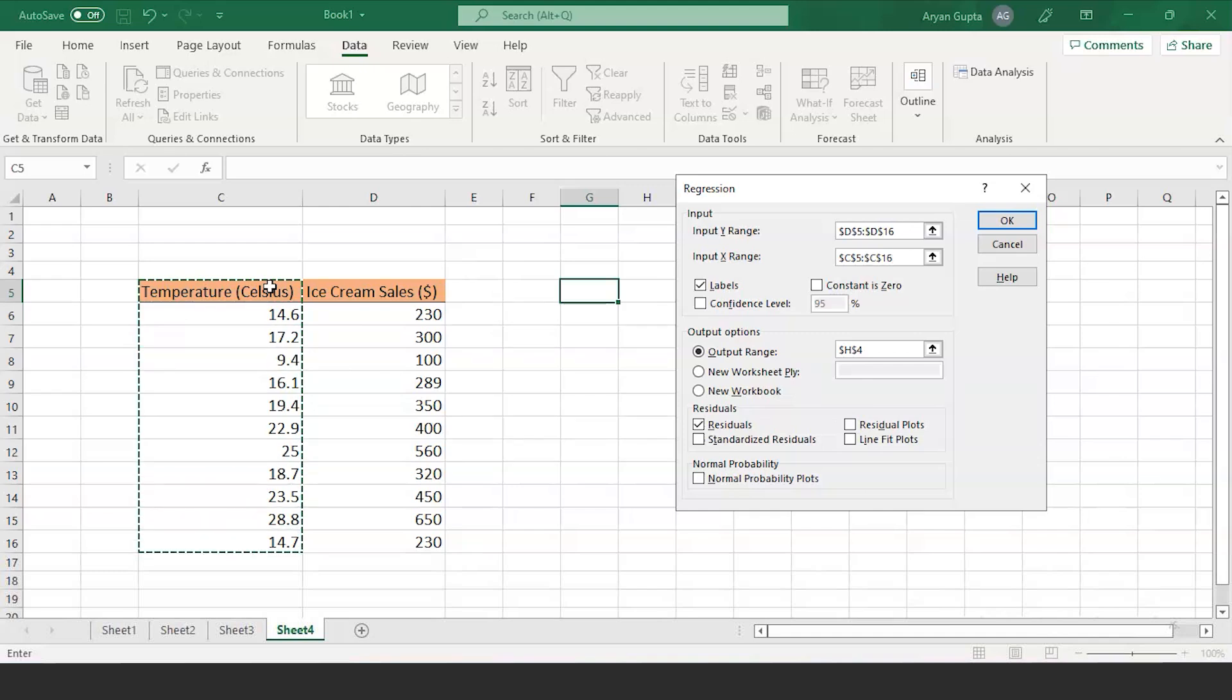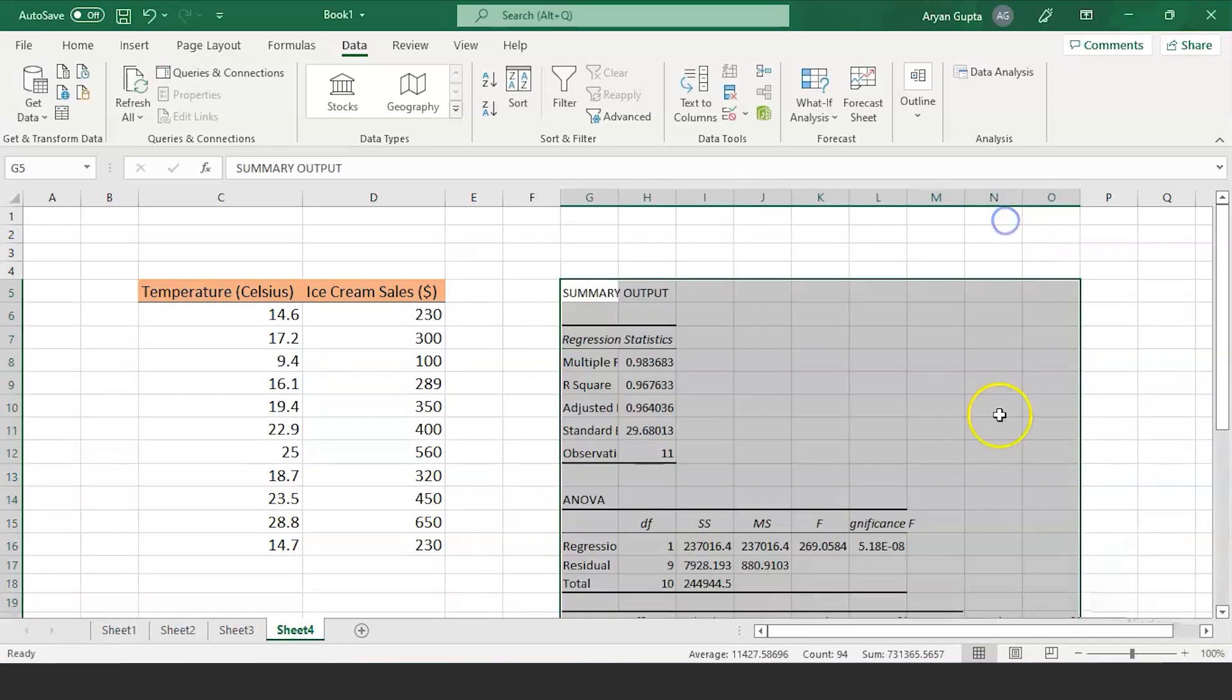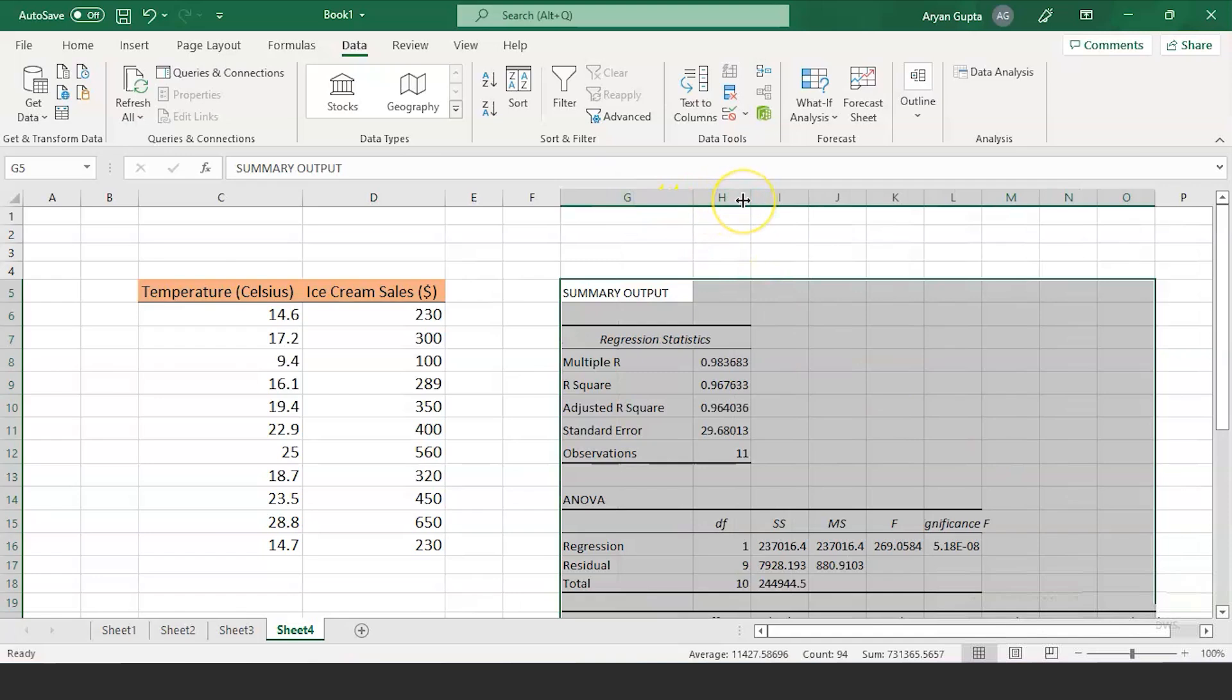One thing you should keep in mind is that both the x and y column must be adjacent to each other. We have the label, so we will check the label and we will select the output range from G5. Check the residues and click OK. Excel produces the following output. Let's analyze some key data.